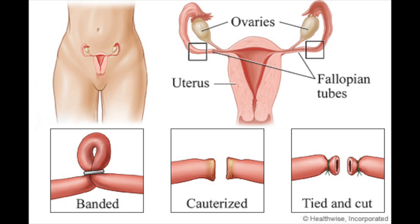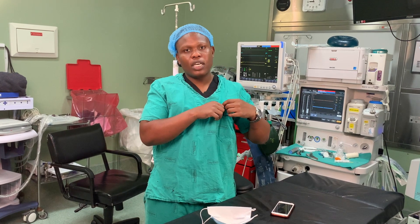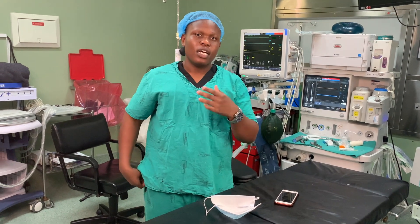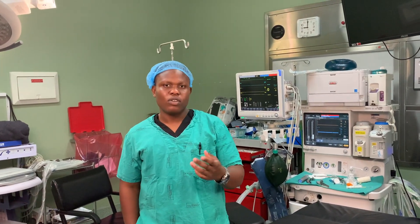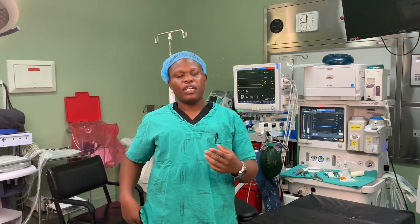About 70% of ectopic pregnancies occur on the ampulla of the tube, with about 10-11% occurring at other locations. That's where a lot of them happen.